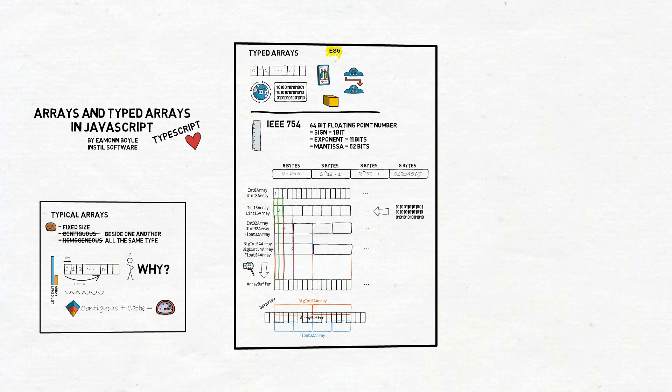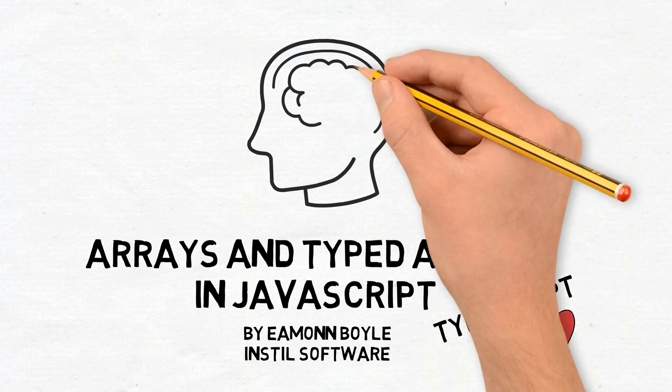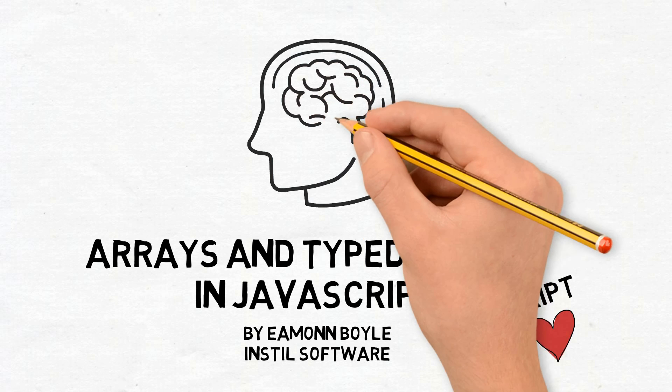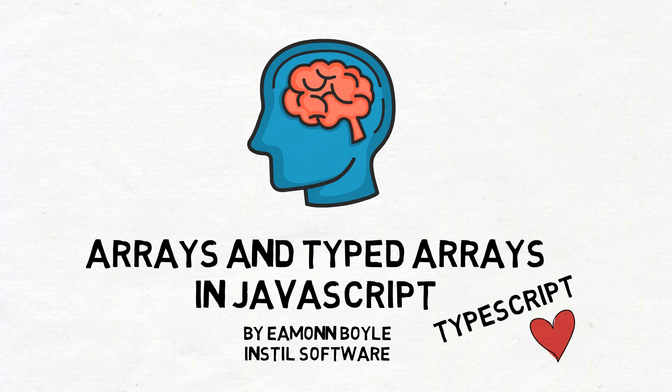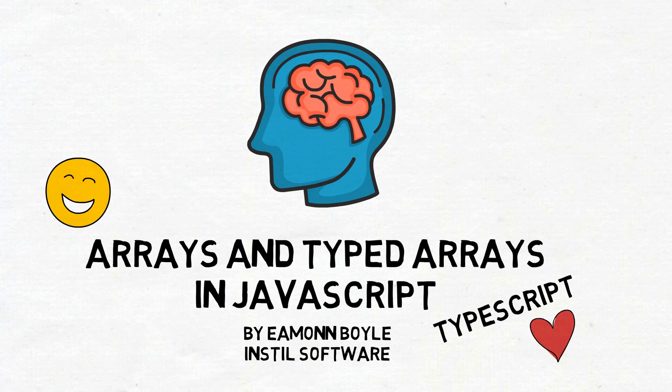So in conclusion, what I really want to get across with this is think about your data structures. Think about how they work, and think about why you're choosing one particular data structure over another. Understand how arrays work in JavaScript, and how they differ from arrays in other kinds of languages, and then have a look at typed arrays if you haven't already done so. You don't need them, but some APIs make really good use of them. And if you're dealing with raw binary data, then they're a really cool, really useful data structure. Thanks for watching.